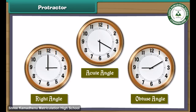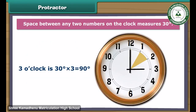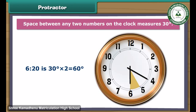The angles made by the hands of a clock can also be worked out without a protractor, because the space between any two numbers measures 30 degrees. By this logic: 3 o'clock is 30 degrees × 3 = 90 degrees; 20 past 6 is 30 degrees × 2 = 60 degrees.